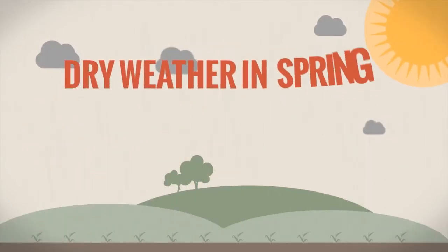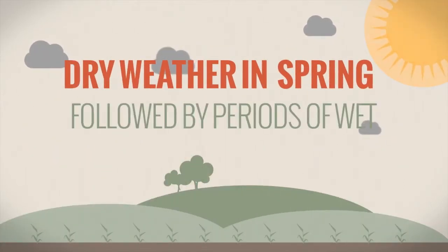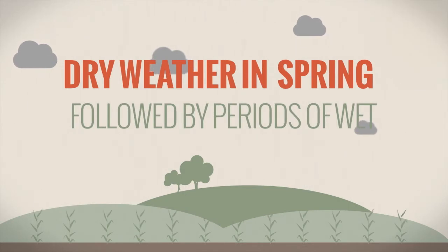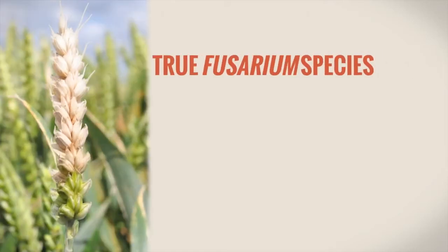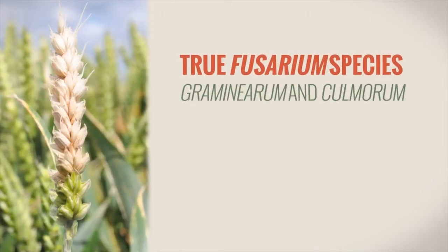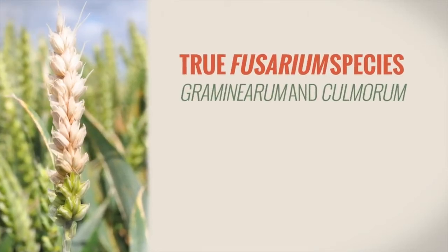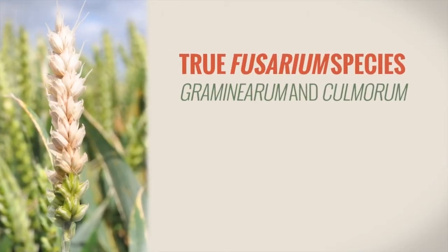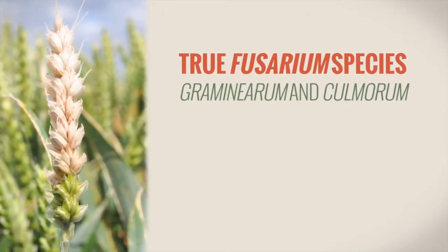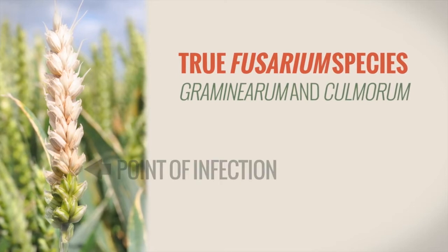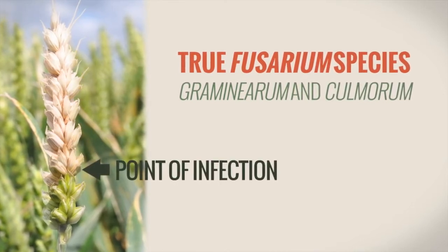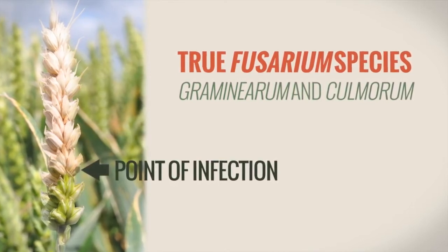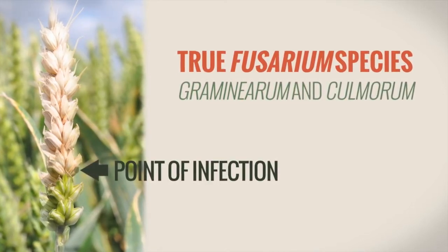Dry weather in early spring, followed by periods of wet, provide the ideal conditions for the development of the inoculum. The True Fusarium species Graminearum and Culmorum will destroy soft green tissue in the ear, cutting off nutrient flow above the point of infection, seriously reducing yield potential.